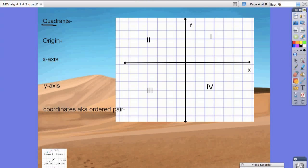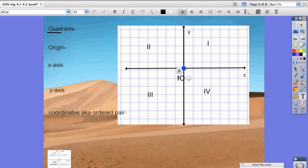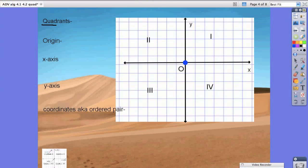There's a very special point called the origin and the origin lies right in the center, right in the intersection of these two lines which is right here in blue. Oftentimes you'll see the letter O right next to it and that's how people know that that's where the origin is.